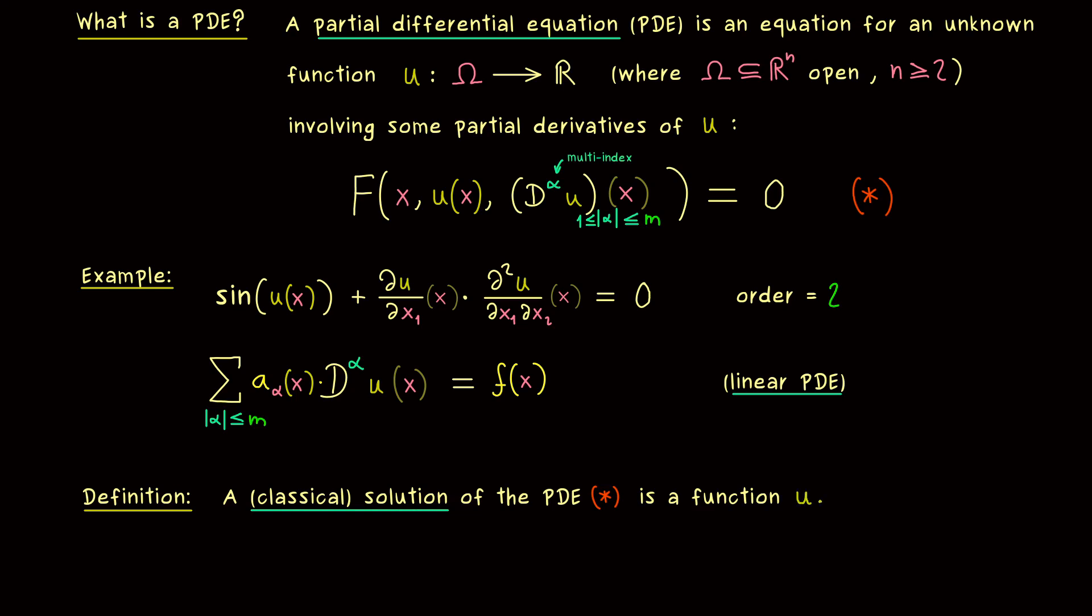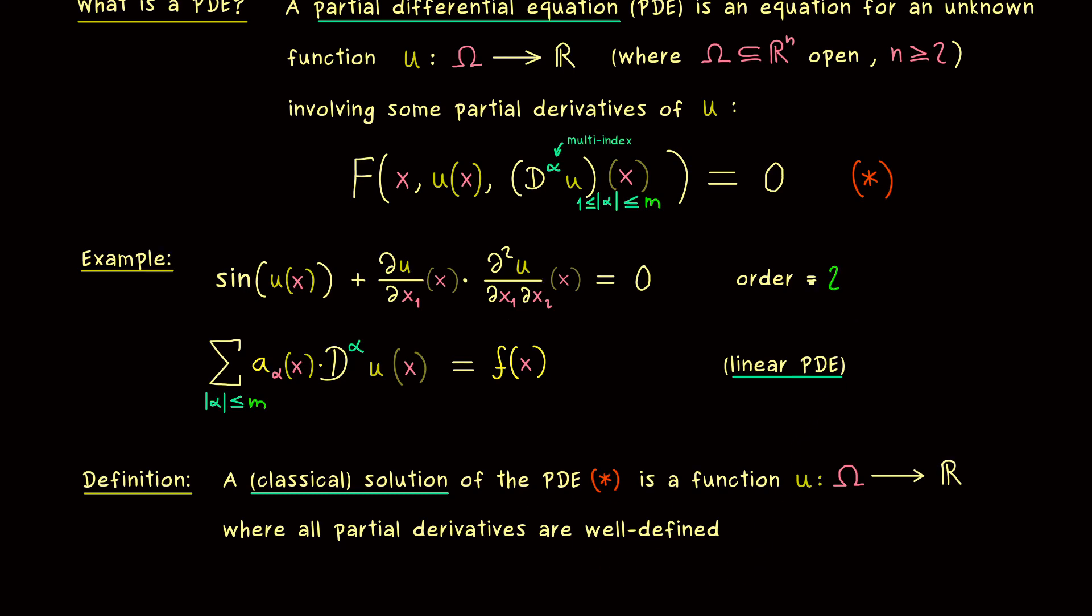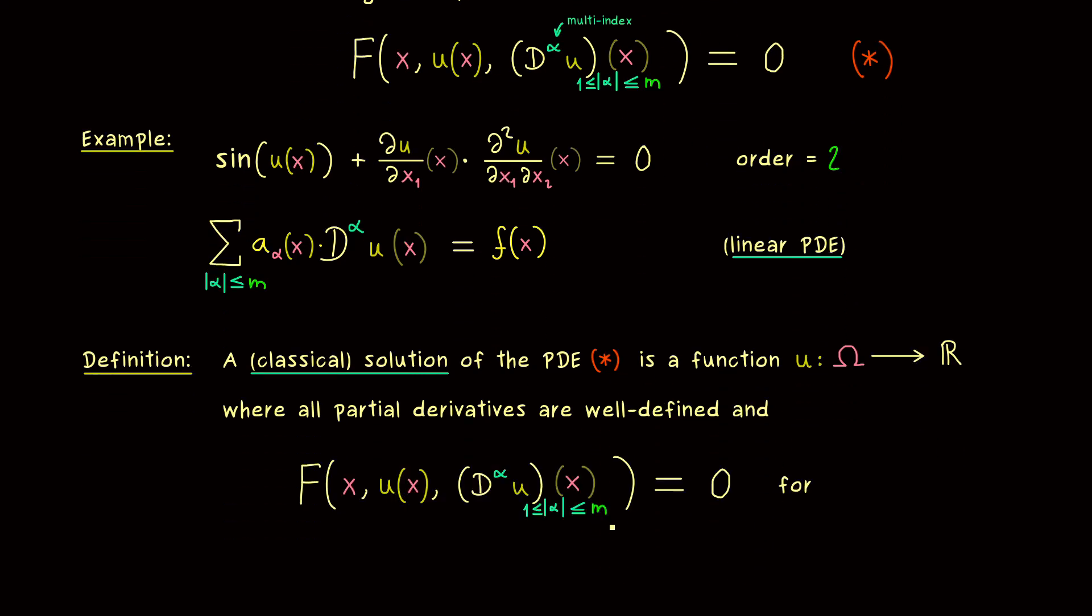because it is just given by a function u defined on the whole set omega. And moreover we need that all the partial derivatives of u that are involved in the PDE are well defined. So the best case would be that we have partial differentiability for all the orders we need. So in any case if everything here is well defined we can put this stuff into our PDE.